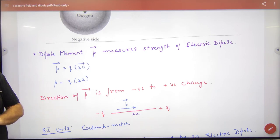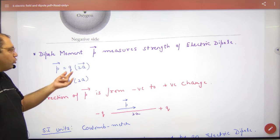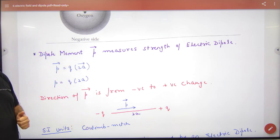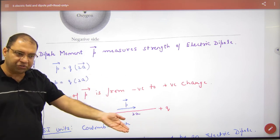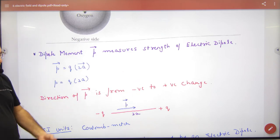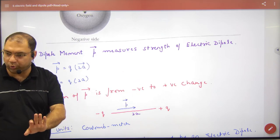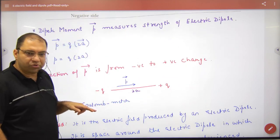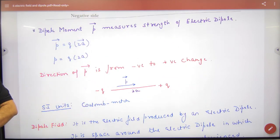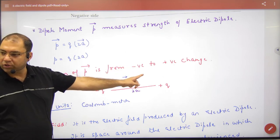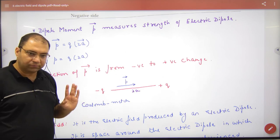Dipole moment P vector calculate karne ka formula: q into 2a vector. Kyunki P vector hai to a bhi vector hai. Or kyunki P vector ki direction is from negative to positive, 2a vector ki direction bhi is from negative to positive. Magnitude ke andar P kya raheega? q into 2a. To jo bhi ek charge leenghe or distance se multiply kar deenghe do charges ko, to ho humare paas P aa jaeega. To maine likh diya direction of P vector is from negative to positive. Ye direction hai.